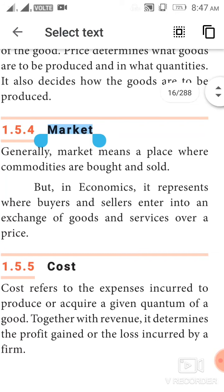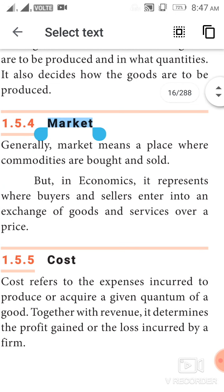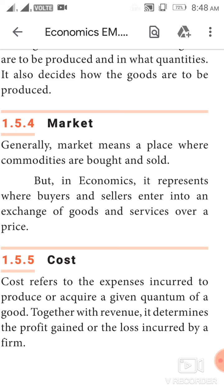Next concept is market. Generally, market means a place where commodities are bought and sold. But in economics, it represents where buyers and sellers enter into an exchange of goods and services over a price. Cost refers to the expenses incurred to produce or acquire a given quantum of a good. Together with revenue, it determines the profit gained or the loss incurred by a firm.